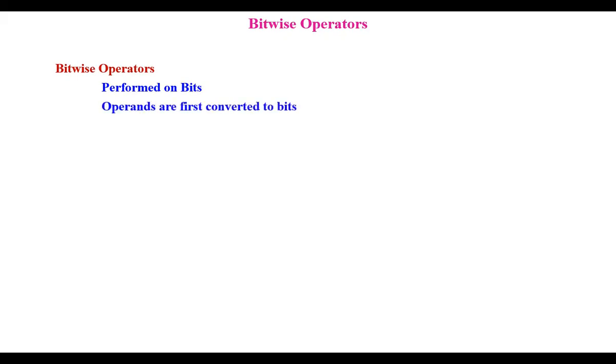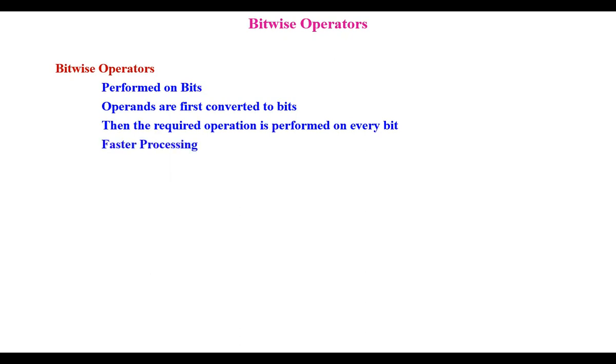Bitwise operators are performed on bits. We know that computers operate on zeros and ones only. So here we go down to the level of those bits and perform these operations. The operands are first converted — whatever values are given — to bits, zeros and ones, and on them the operation is performed. Because the action is being taken on the bits, it is very fast and it is faster processing.